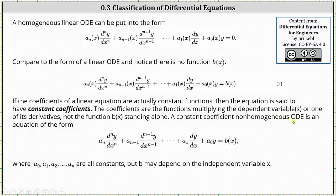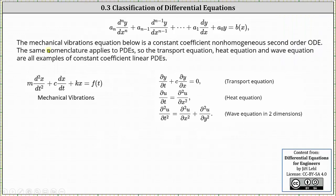A constant coefficient non-homogeneous ODE is an equation in the form shown below, where a sub zero through a sub n are all constants, but the function b may depend on the independent variable x. For some examples, the mechanical vibrations equation is a constant coefficient non-homogeneous second order differential equation. The same nomenclature applies to PDEs, so the transport equation, heat equation, and wave equation are all examples of constant coefficient linear partial differential equations.